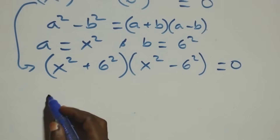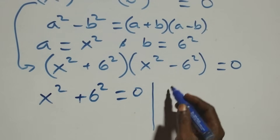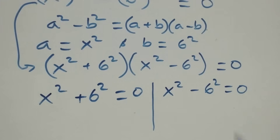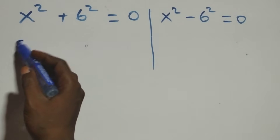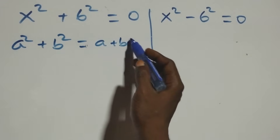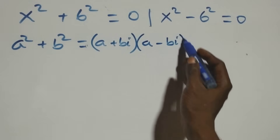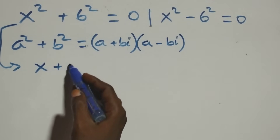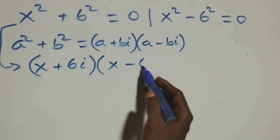We now have two possible cases: either x² + 6² = 0, or x² minus 6² = 0. For the first case, we use the identity a² + b² equals (a + bi)(a - bi). So x² + 6² factors as (x + 6i)(x - 6i).